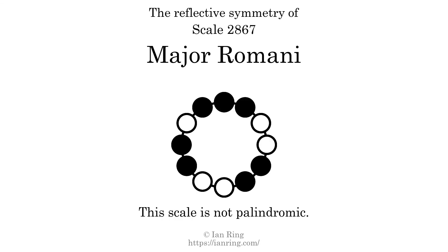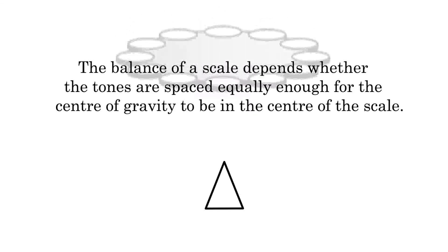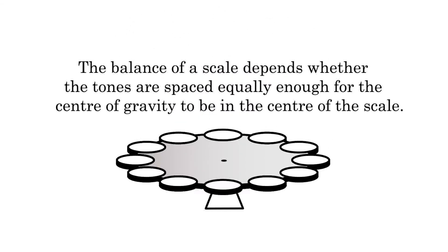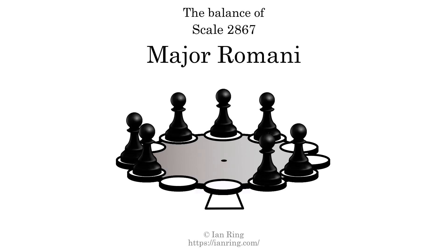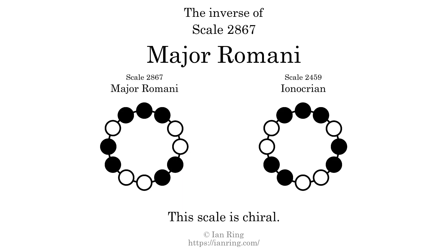This scale has no reflective symmetry. This scale has a different pattern of intervals ascending and descending, so it is not palindromic. This scale has no ridge tones. The balance of a scale depends whether the tones are spaced equally enough for the center of gravity to be in the center of the scale. This scale is not balanced. The inverse of a scale is a mirror image — it is what you get when the sequence of intervals is reversed. The inverse of this scale is scale 2459, also known as Anocrian. This scale is chiral; it cannot transform into its inverse by rotational transformation.